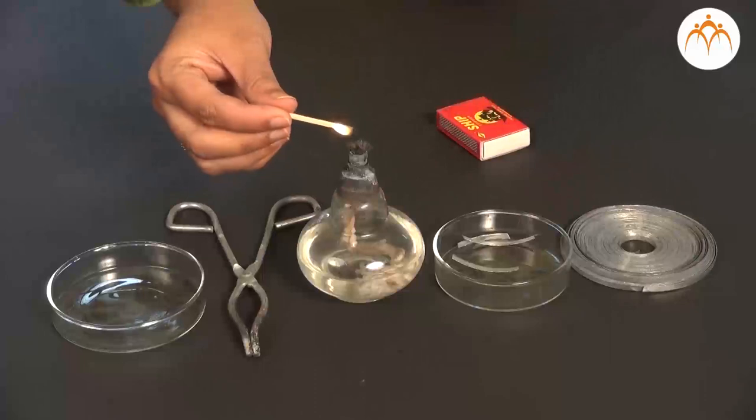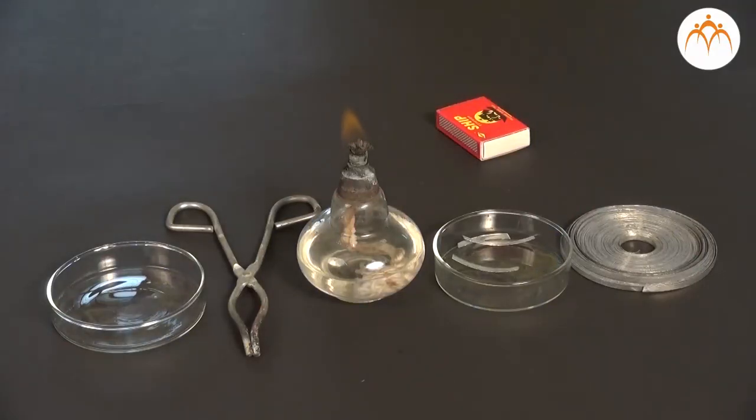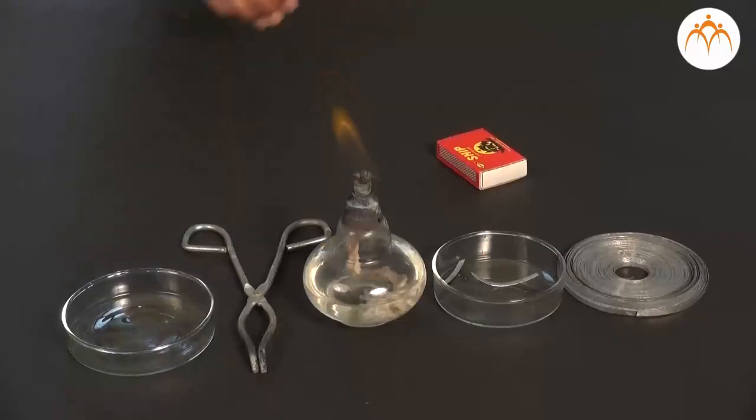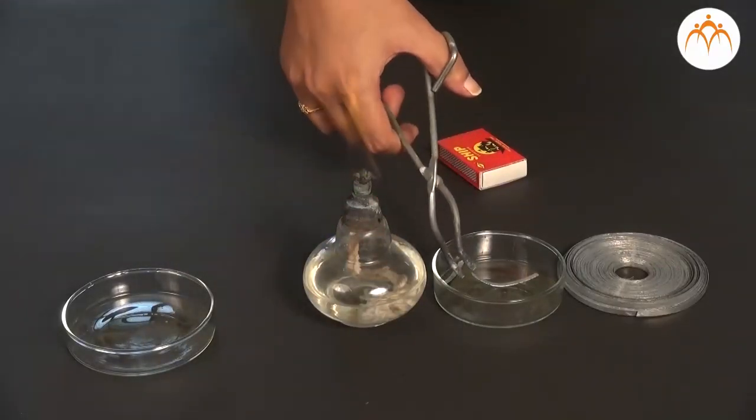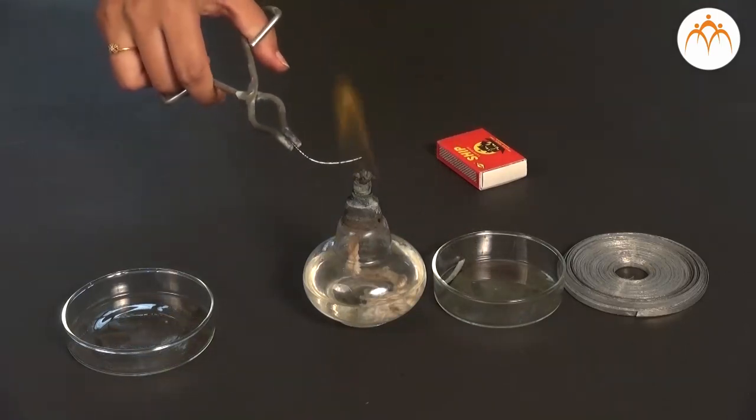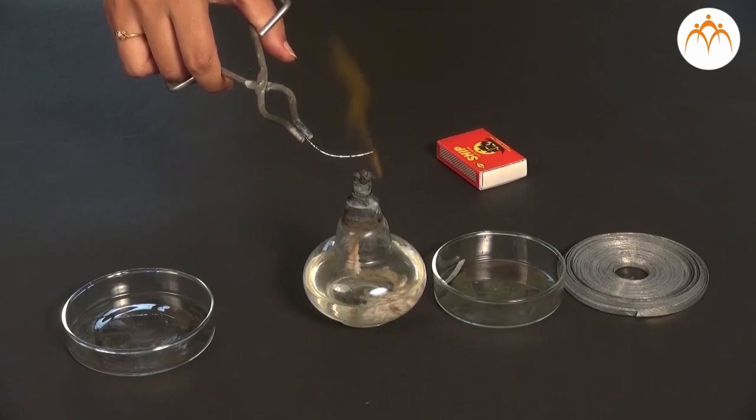We need magnesium ribbon for the first experiment. We are going to burn a small piece of this ribbon in air. We hold a small piece with a pair of tongs. Burn it using burner or spirit lamp flame. We collect the ash in the watch glass or china dish.